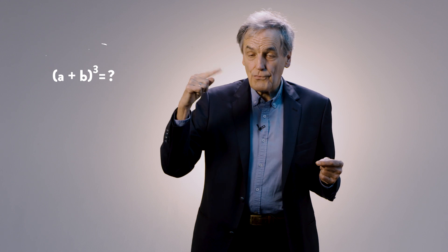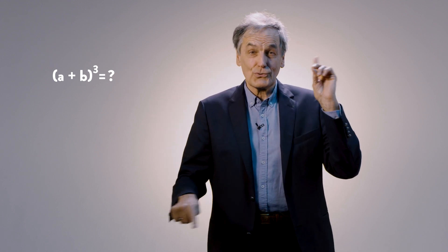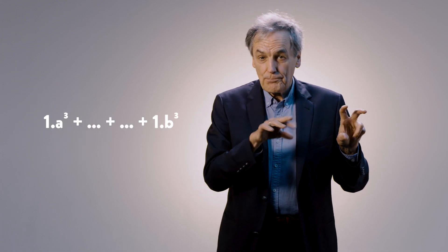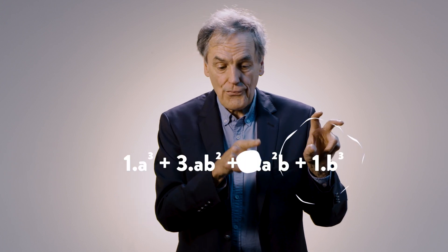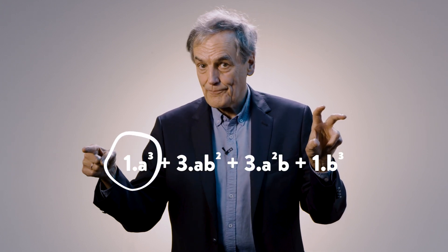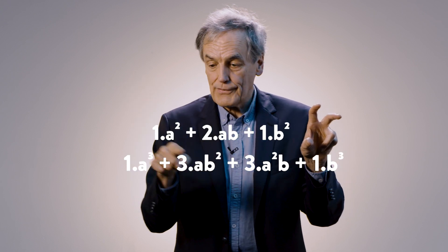Now let's do it for the third power. There is no visual possible because you would need to do that in three dimensions. But believe me, the answer — a plus b to the third power — will be something with a cubed plus b cubed. And if you look at the coefficients, you find: one, three, three, one. You remember the first one? One, two, one. Now: one, three, three, one.